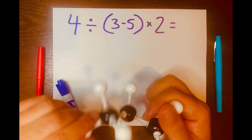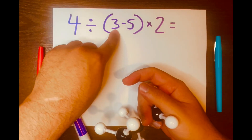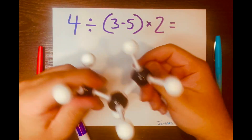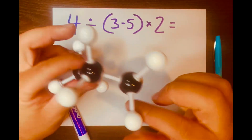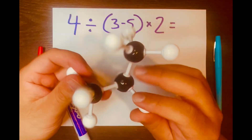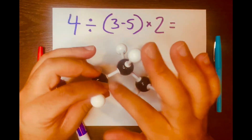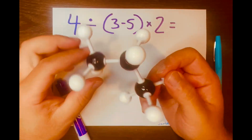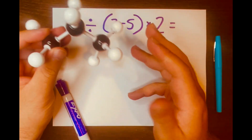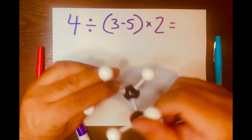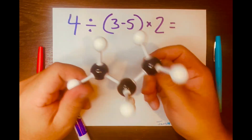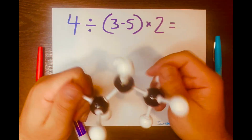So before I start solving 4 divided by (3 minus 5) times 2, take a close look at this molecule right here. As you can see, it is made up of three black spheres and eight white ones. In chemistry, the black spheres represent carbon atoms and the white ones represent the hydrogen atoms. So we got three carbons and eight hydrogens. My question for all of you is, what do you call this molecule? Leave your best guess in the comment section down below.